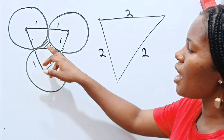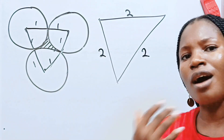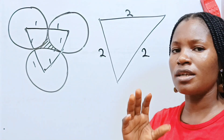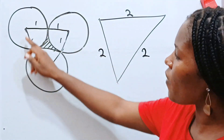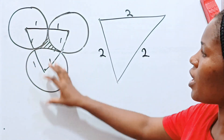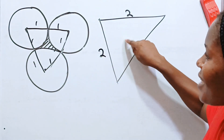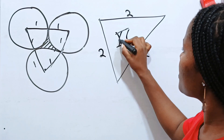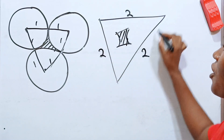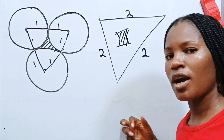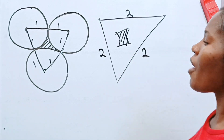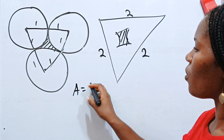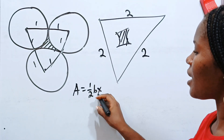The problem says we should find the area of the shaded portion. We are going to do that by first finding the area of the whole triangle — remember the shaded portion is inside this triangle — and the area of a triangle is half base times height.